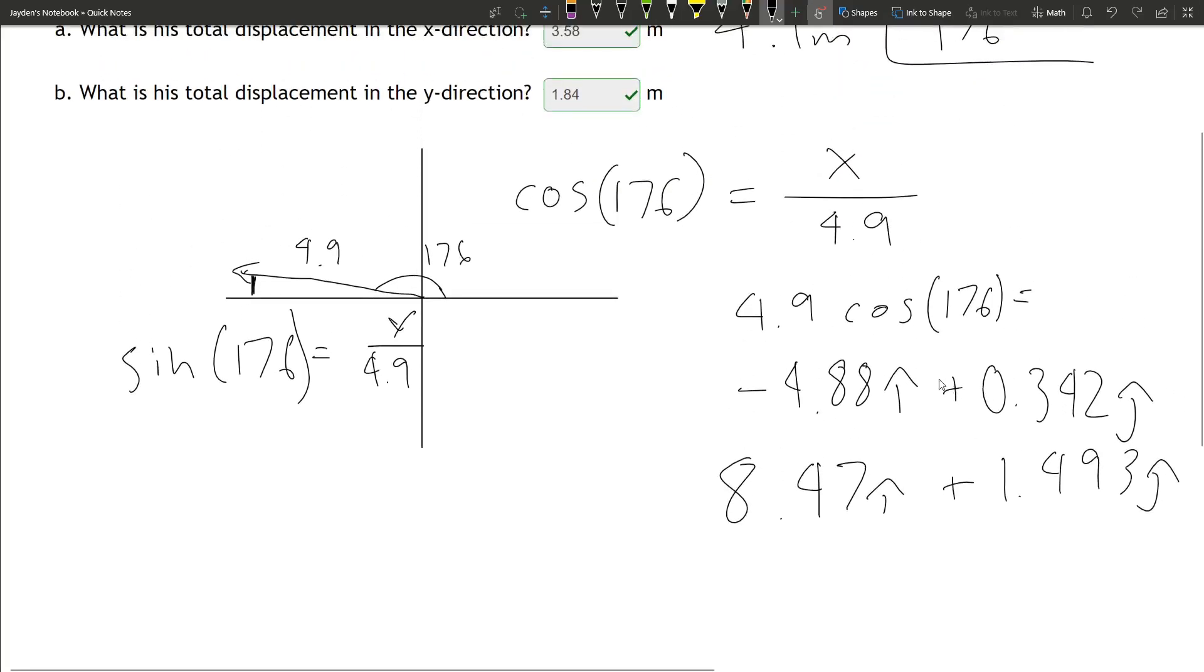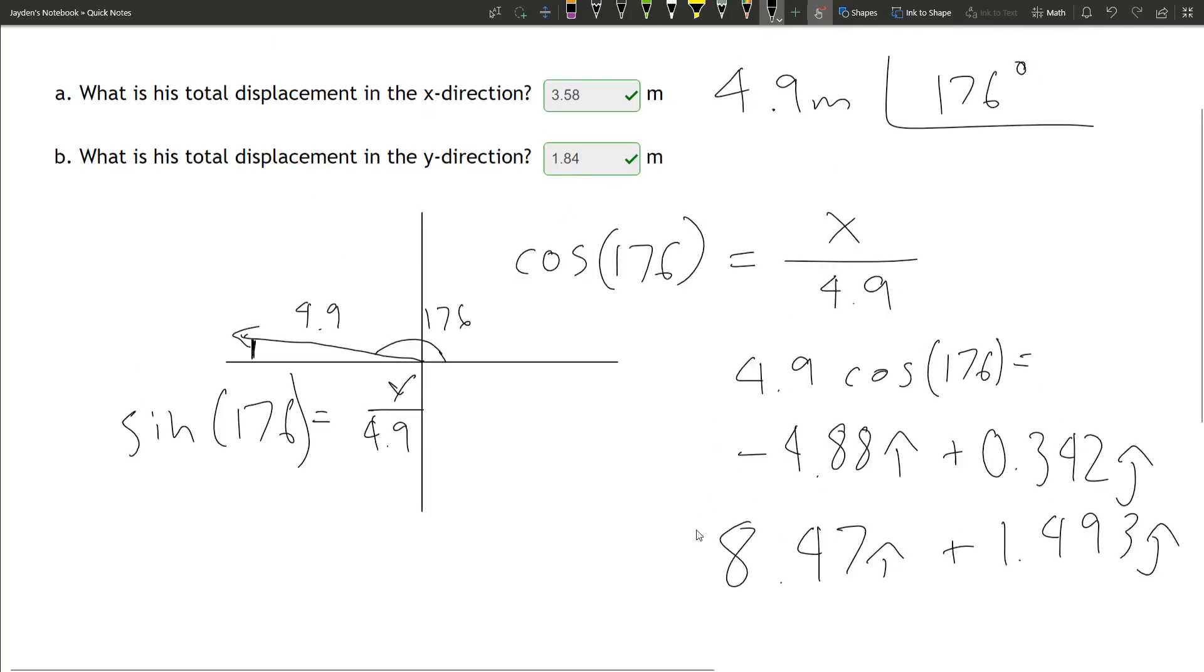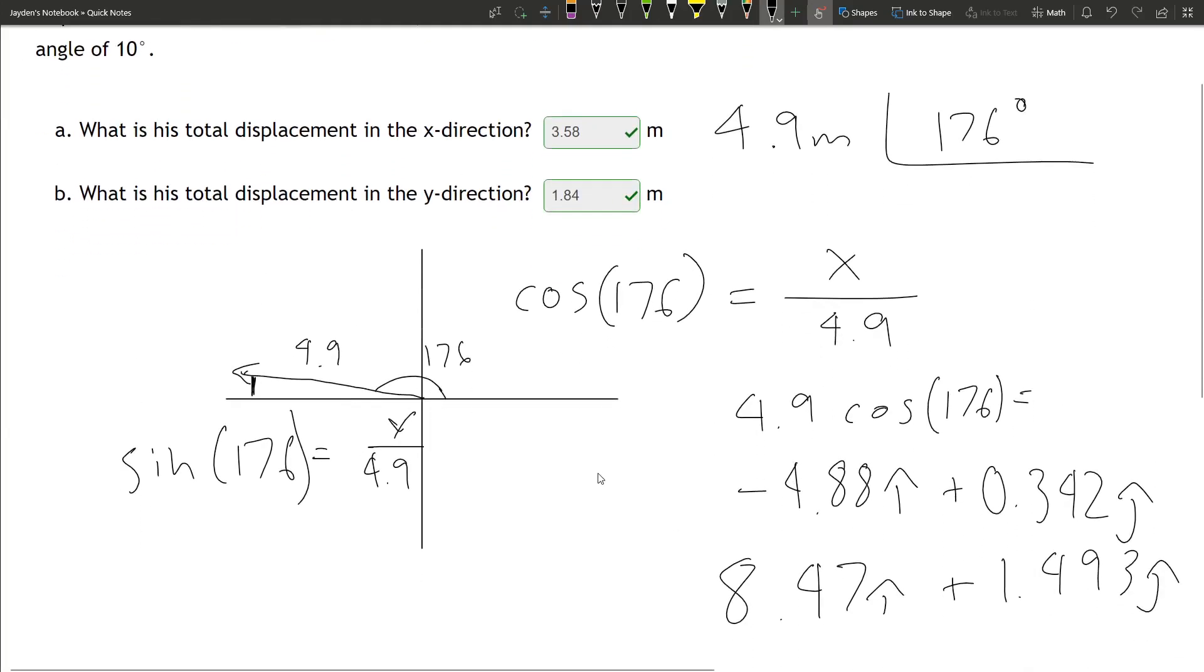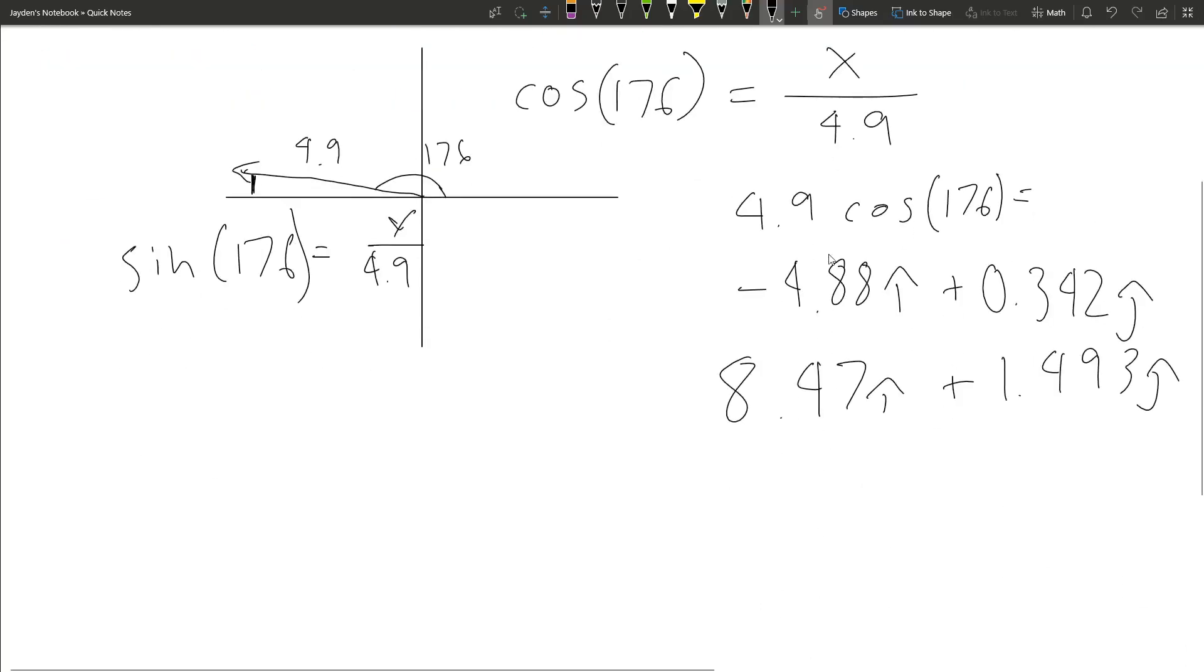Now that we have the displacement in rectangular form, we can add them to see the total displacement in both directions. Negative 4.88i plus 8.7647i gives 3.59 in the i-direction total.